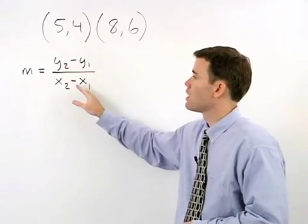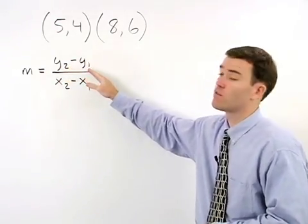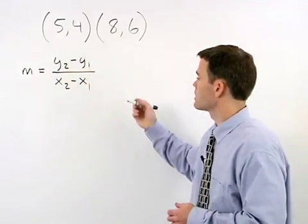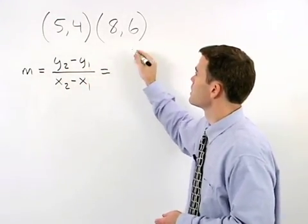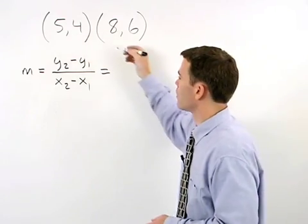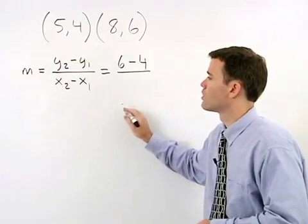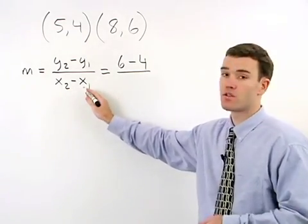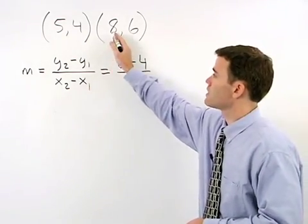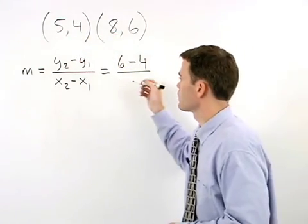In other words, we take our second y minus our first y, which in this case is 6 minus 4, over our second x minus our first x, which in this case is 8 minus 5.